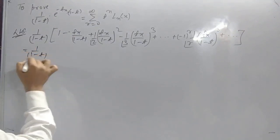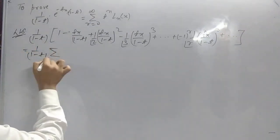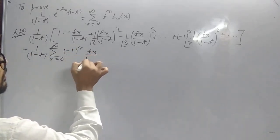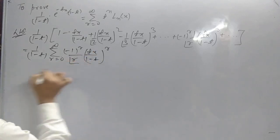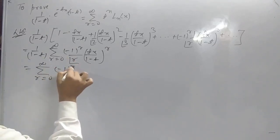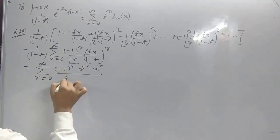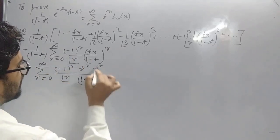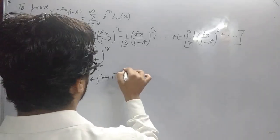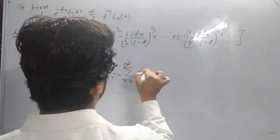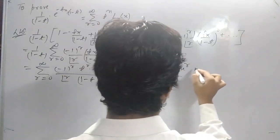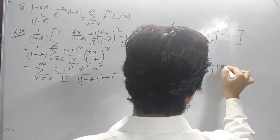This becomes 1 upon (1 minus t), and this can be written as summation over r equal to 0 to infinity of minus 1 to the power r, times (tx) upon (1 minus t) to the power r, upon factorial r. So multiplying it with (1 minus t), we get minus 1 to the power r, times t to the power r, times x to the power r, upon factorial r, times (1 minus t) to the power r plus 1.